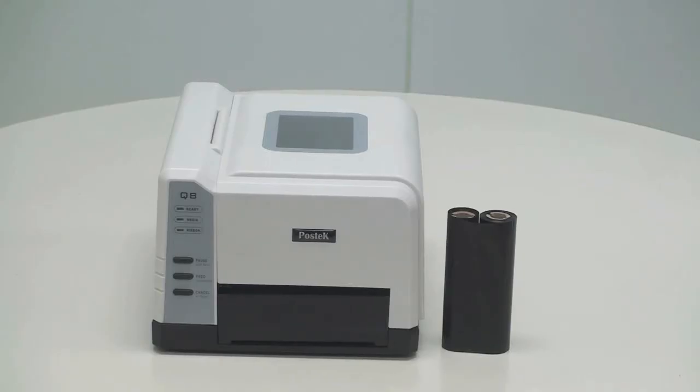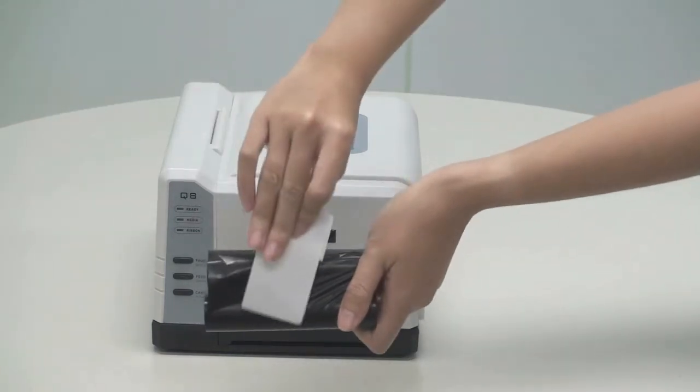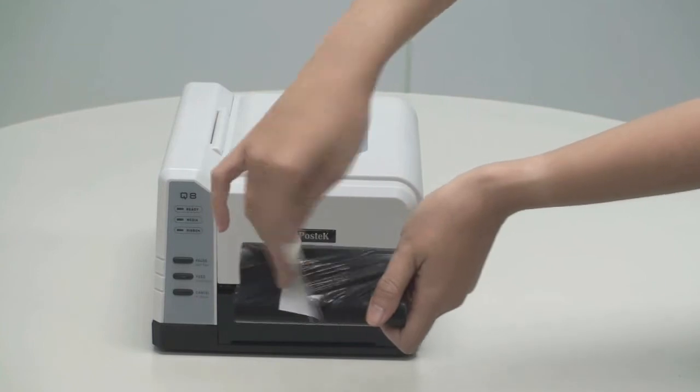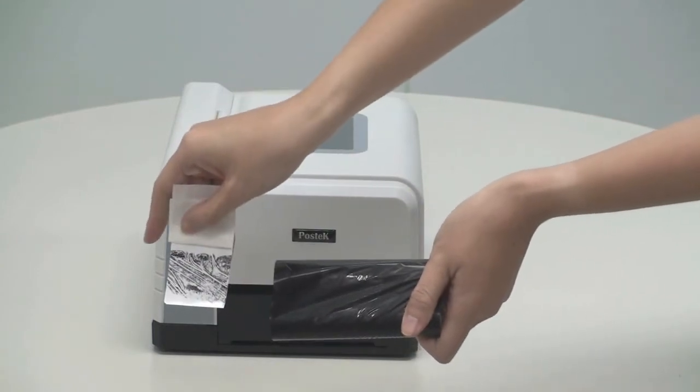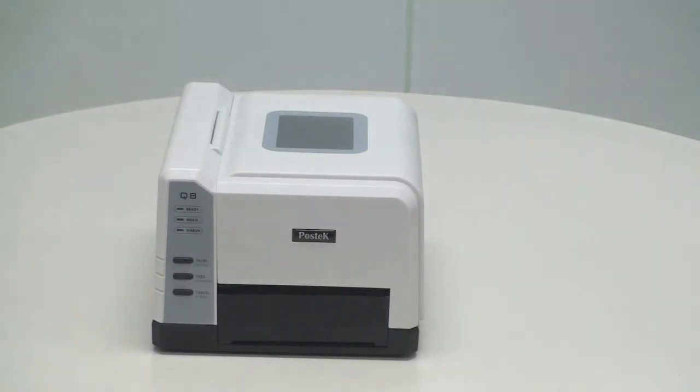Now, we'll first check to determine what side of our ribbon the ink is on. The Q8 Series printer is compatible with ribbons that have ink on the outside of the ribbon. To check, stick a label to the ribbon to see if ink accumulates. Since we have confirmed that the ink on this ribbon is on the outside, we can begin the process of loading our ribbon.